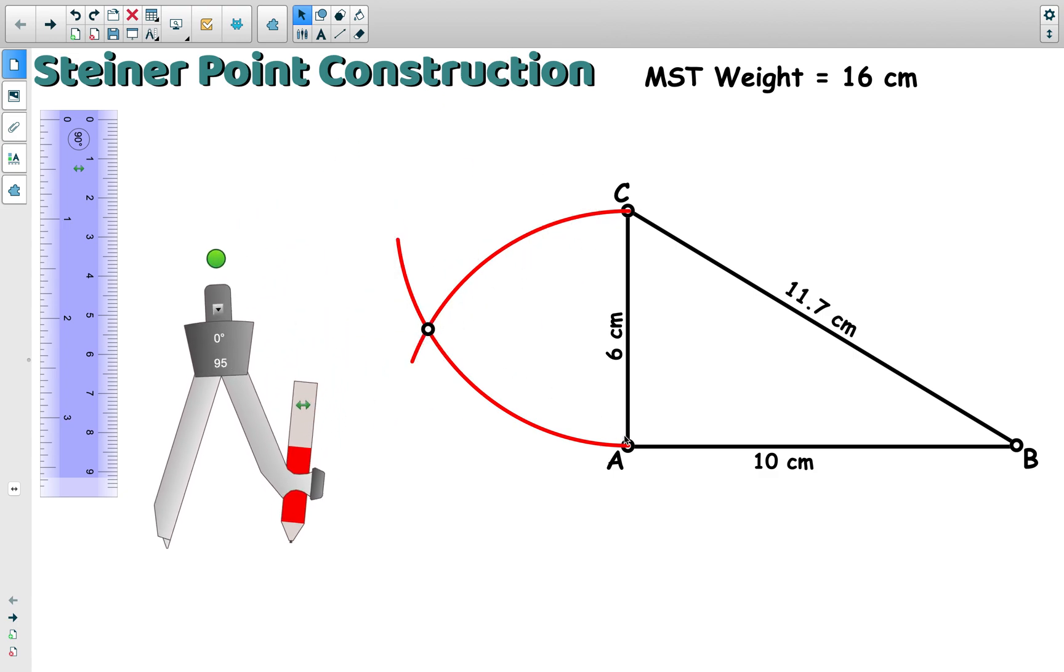So now I'm going to connect the point with A and C. Let's give this point a name—we'll call it D. And I'm going to delete these arcs out; I don't need them anymore.